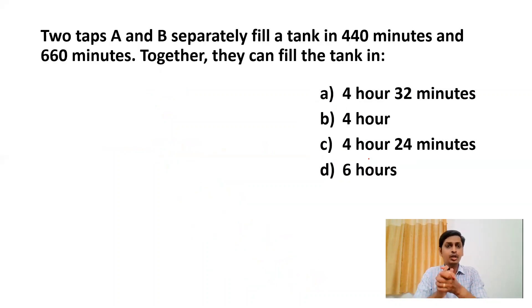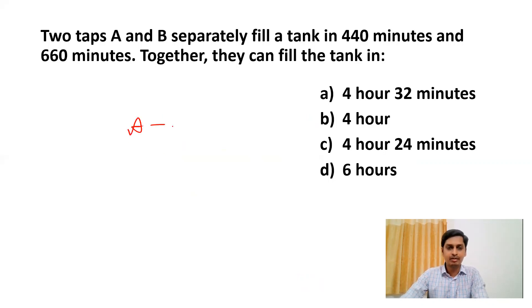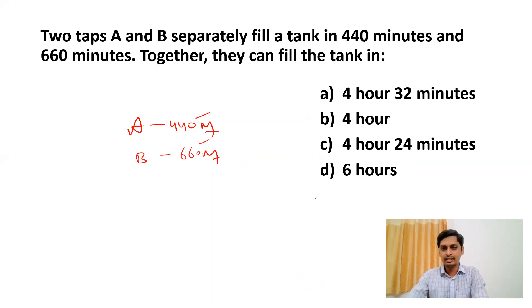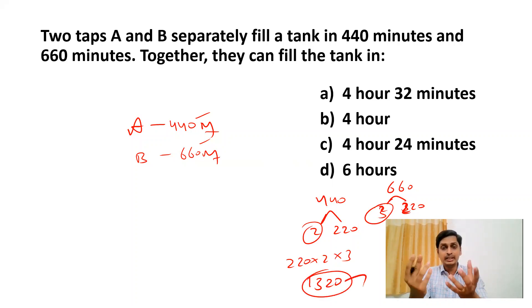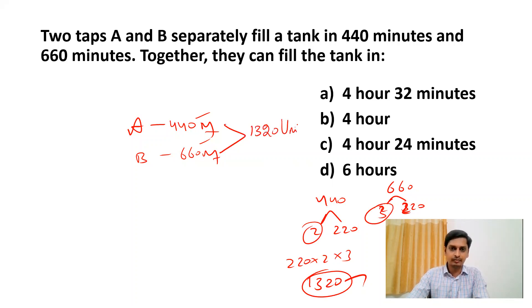Next question: Two taps A and B separately fill a tank in 440 minutes and 660 minutes. Together, how long can they fill the tank? This is a pipes and cisterns problem. We take the LCM of 440 and 660: since 2 × 220 = 440 and 3 × 220 = 660, LCM = 6 × 220 = 1320. We assume the total tank capacity is 1320 units.